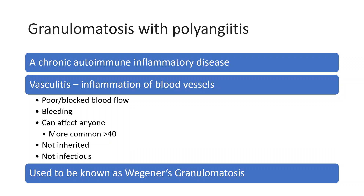Vasculitis can affect anyone, so GPA can affect anyone, although it is more common in those older than 40, but certainly at any age. It's not an inherited condition and it's not infectious either — you can't catch it from someone else. It's also important to note that the term GPA, or granulomatosis with polyangiitis, is relatively new over the last 10-plus years, as this condition used to be called Wegener's granulomatosis. We're moving away from eponym names — meaning naming conditions after individuals.